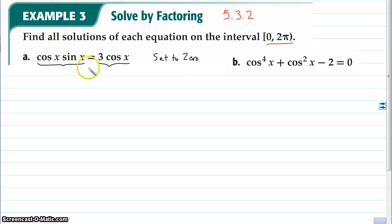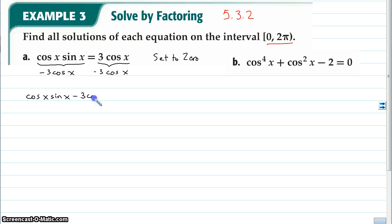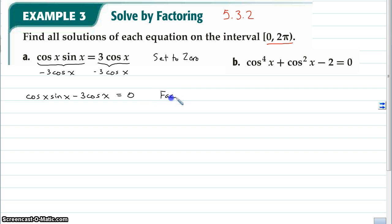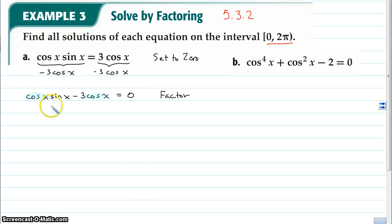My first step is to set one side of the equation equal to 0. It seems easier to move 3 cosine x over to the other side, so I'm going to subtract 3 cosine x from both sides. So I have cosine x · sine x minus 3 cosine x. These are two very different terms — we can't combine them. But now that they're on one side and it's set equal to 0, hopefully there's something we can factor out of each term. Looking at the two terms, their common factor is cosine x. Cosine x here matches the cosine x here, so we can divide both terms by cosine x and bring that out to the front.